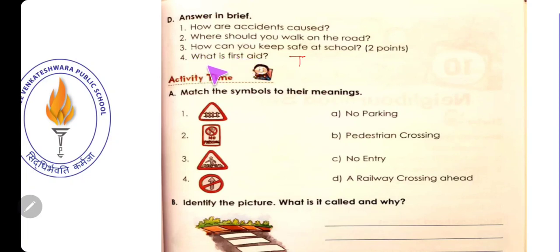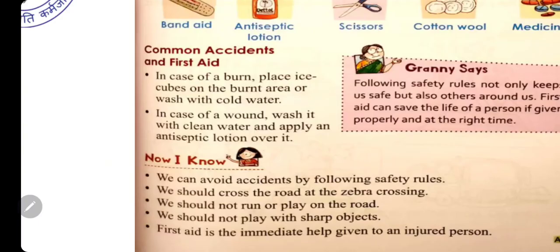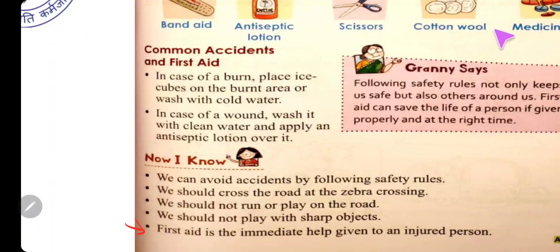Number four: What is first aid? First aid क्या होती है? The answer is: first aid is the immediate help given to an injured person. यह answer आपको लिखना है।